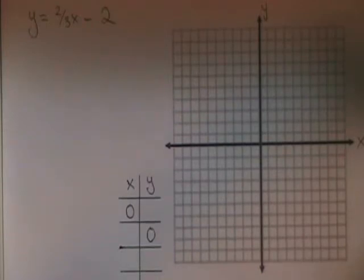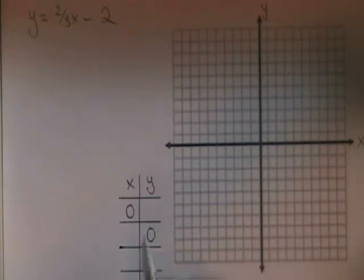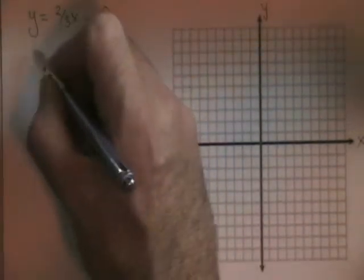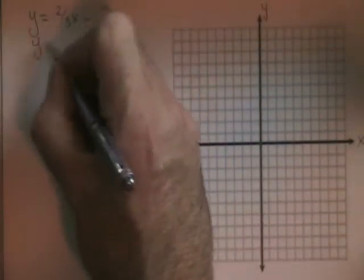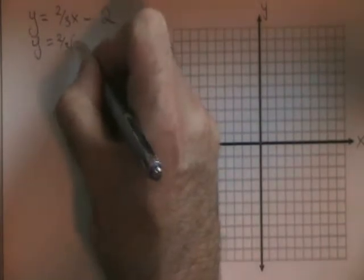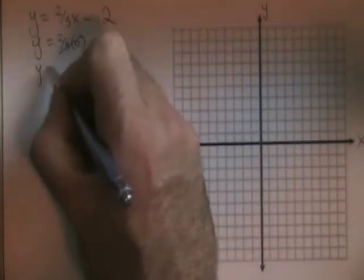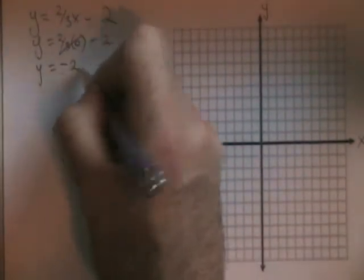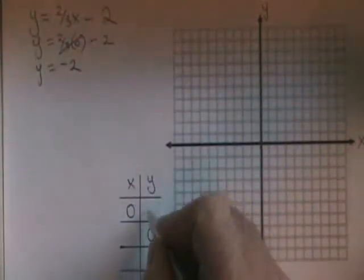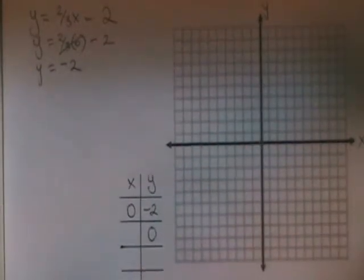Our equation is y equals two-thirds x minus two. If x equals zero, y equals two-thirds times zero minus two. The two-thirds times zero cancels, and you have y equals negative two. We have found our first intercept.